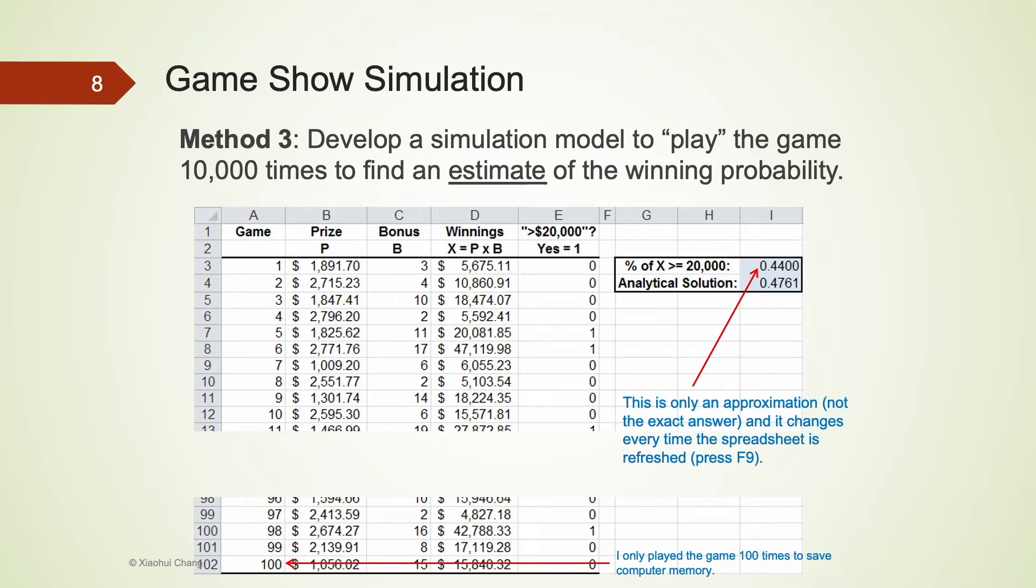As shown in the upper right corner of the spreadsheet, using 100 games, I estimate the probability to be 44%, which is quite close to the true analytical solution of 47.6%. One thing to notice is that every time I press F9, this spreadsheet is refreshed. Another 100 games are simulated, and the probability will be slightly different, but shouldn't be too far away from the true solution of 47.6%.